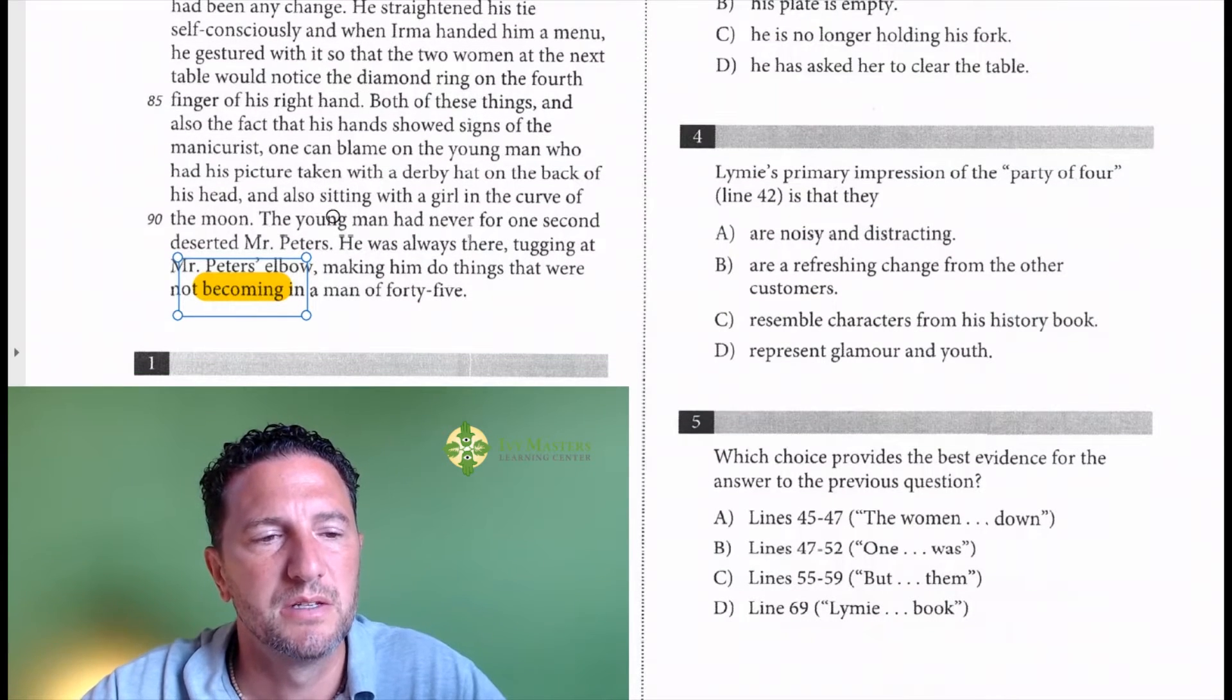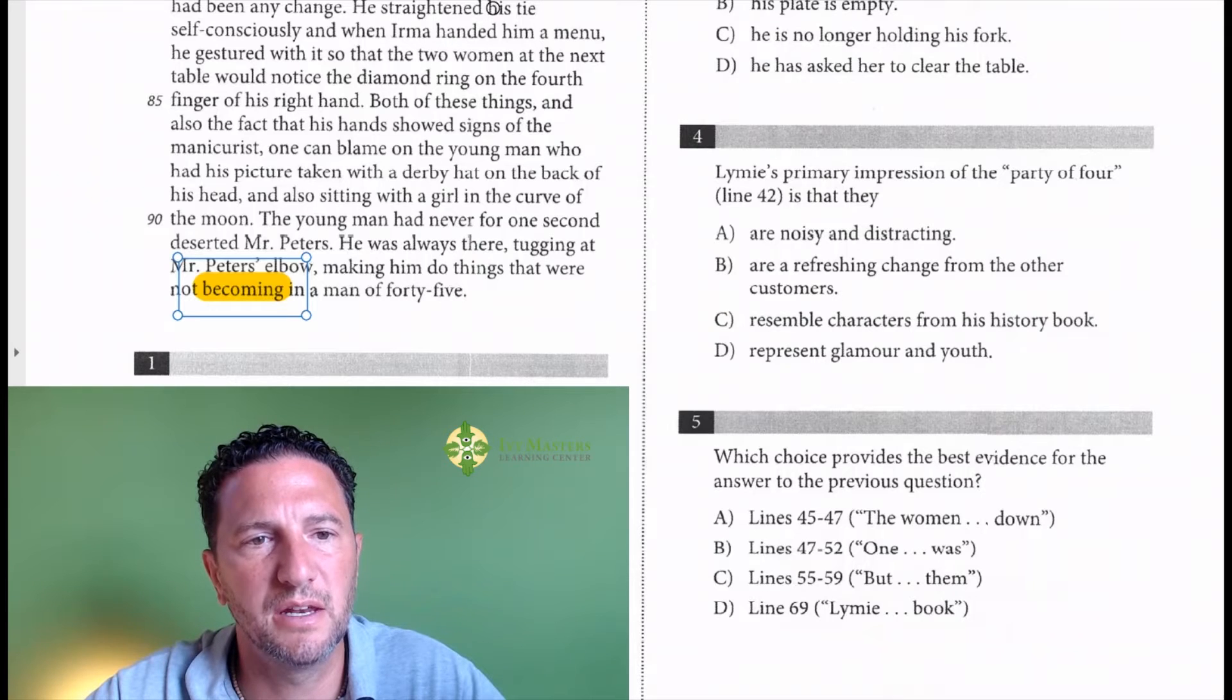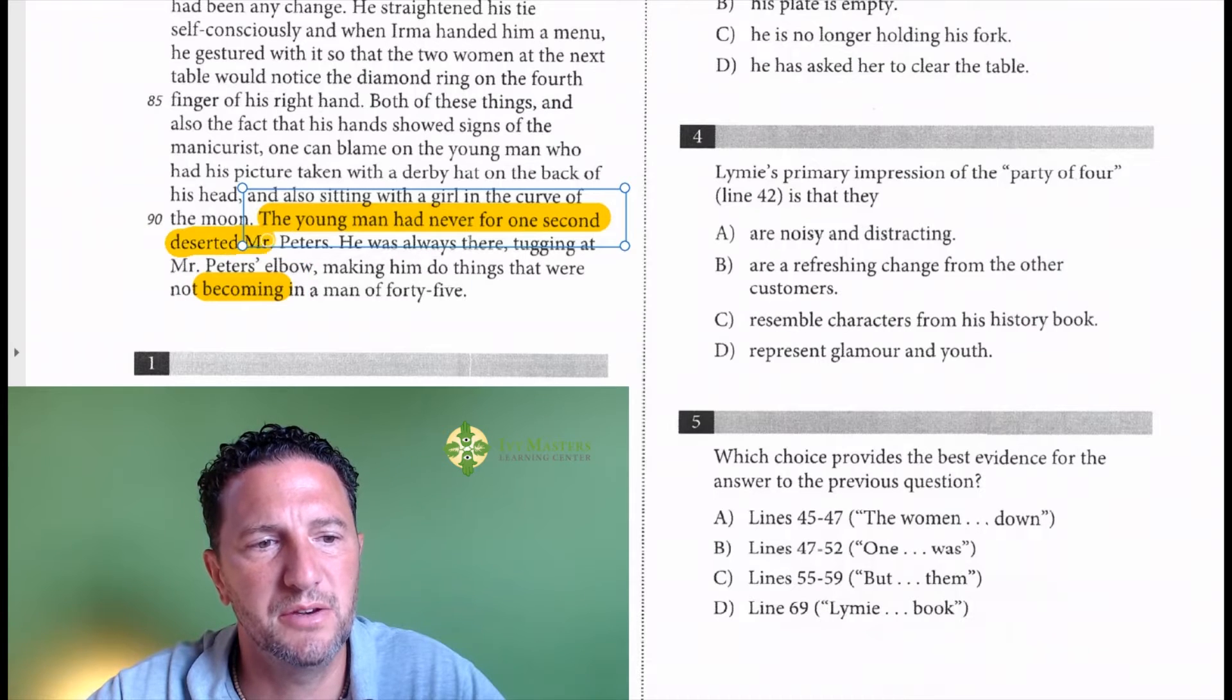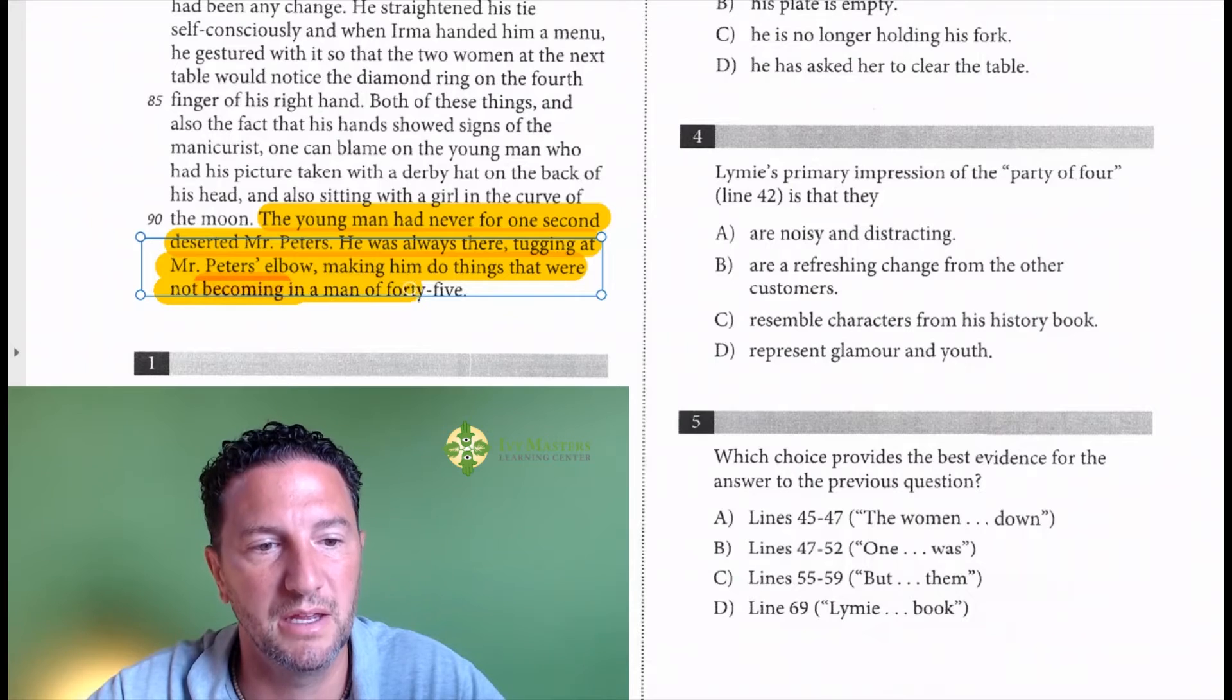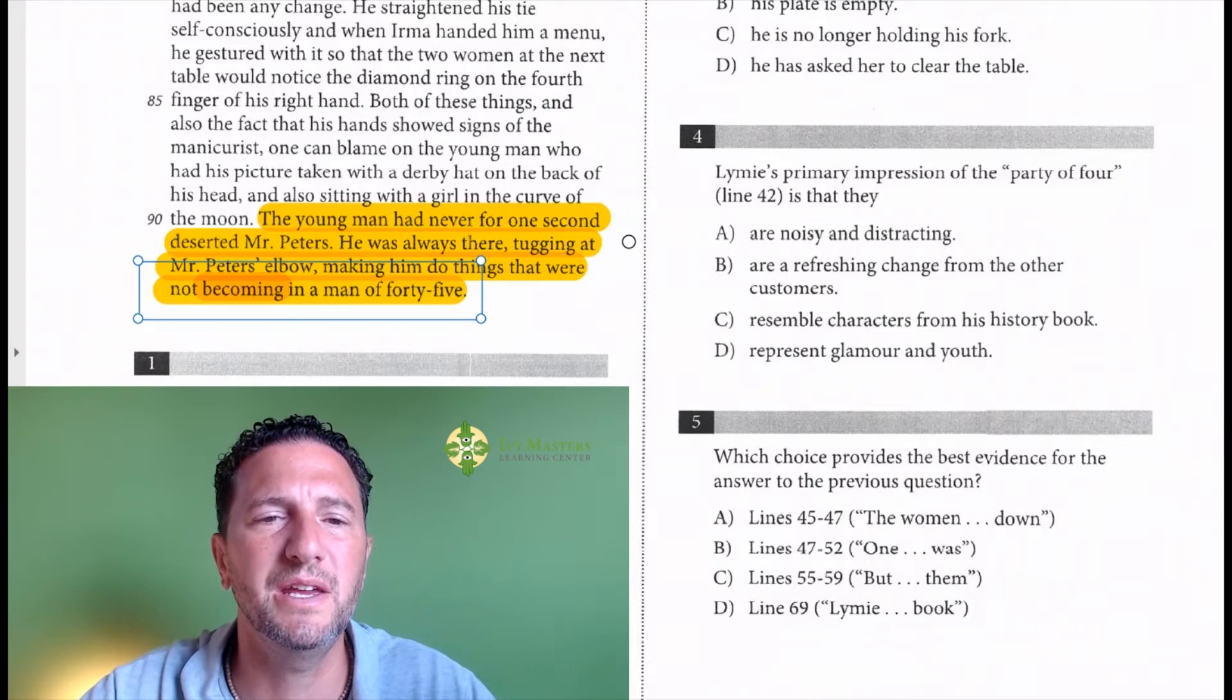So I'm going to get back up a sentence just to get a little bit of context. We've got: the young man had never for one second deserted Mr. Peters. He, meaning the young man, was always there tugging at Mr. Peters' elbow, making him do things that were not becoming of a man of 45. And hopefully you can tell from that context.